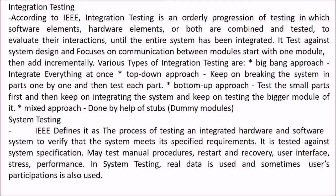Integration testing, as defined by IEEE, is an orderly progression of testing in which software elements, components, or hardware elements are combined and tested to evaluate their interaction until the entire system has been integrated. It tests against system design and focuses on communication between modules, starting with one module and adding them incrementally. Types of integration testing include big bang integration (integrating all modules at once), top-down approach (breaking the system into parts one by one and testing each), bottom-up approach (testing small parts and integrating upward), and a mixed approach using stubs and drivers.